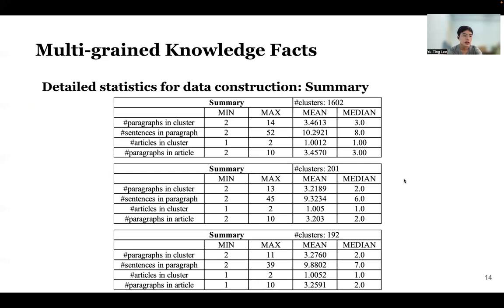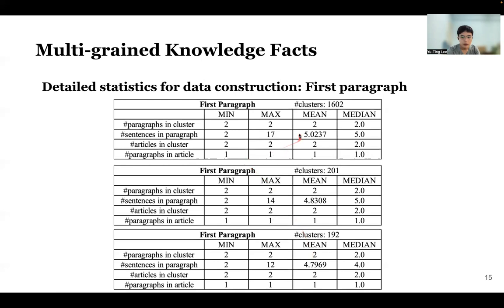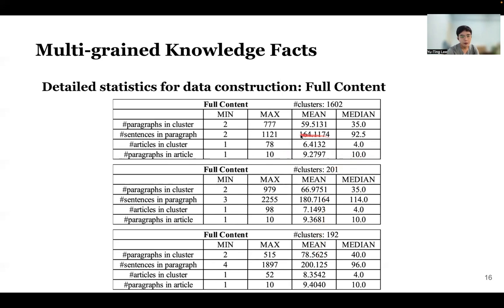In our dataset construction, we provide detailed statistics. To match the WCP10 dataset, we set the minimum number of sentences to 10. The median number of sentences per paragraph at the summary level is about 10 sentences. At the first paragraph level, there are about 5 sentences per paragraph, as the first paragraph is shorter than the summary. At the full content level, the number of sentences per paragraph exceeds 150, making it very long and hard for the model to digest and construct appropriate output.